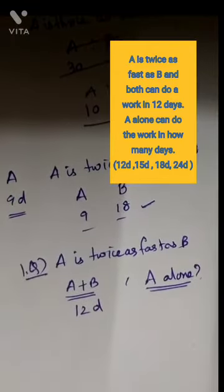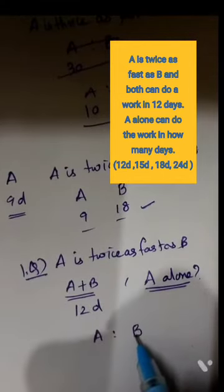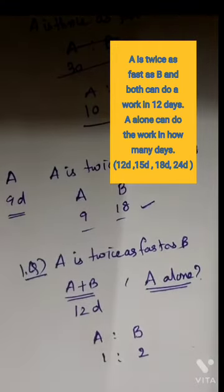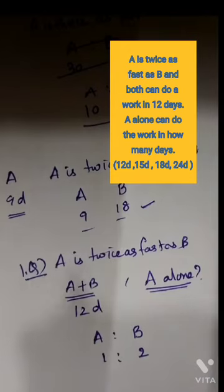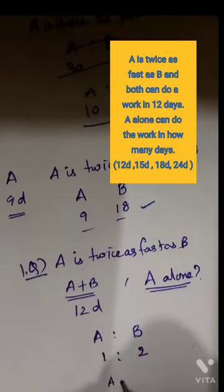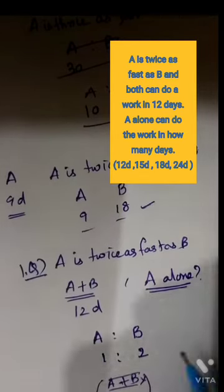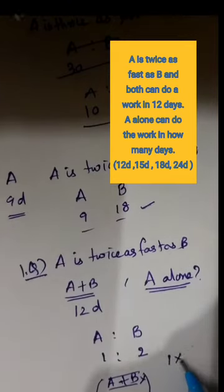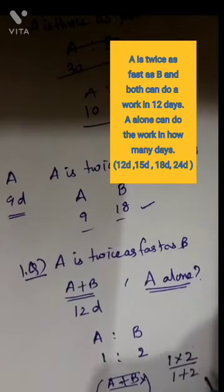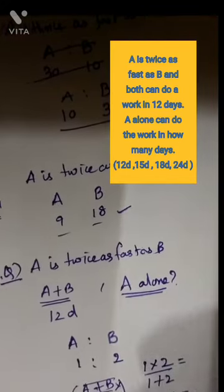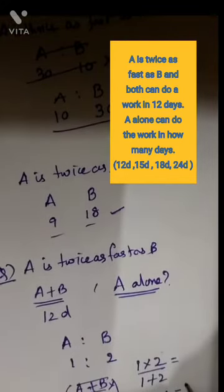This is based on efficiency. A is to B ratio — it is not 2 is to 1, it is 1 is to 2. A is twice as fast as B. Both together will do the work in 12 days. A and B working together means we write 1 by 1 plus 1 by 2 for one day's work. Instead, we use a shortcut: XY divided by X plus Y, that is 1 into 2 by 1 plus 2, which equals 2 by 3 X.